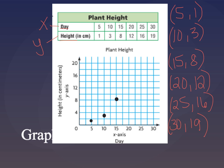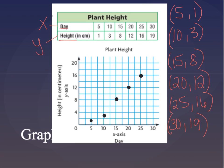Next I have 20 and 12, so I go over to the 20, up to the 12. Then I have 25 and 16, so I go over to the 25, up to the 16. And I have last 30, 19, so over to the 30, right underneath the 20. Oops.